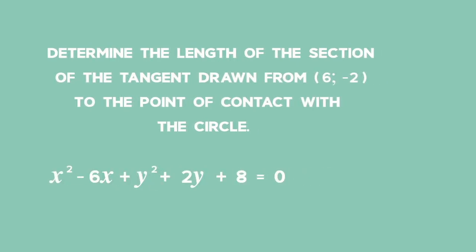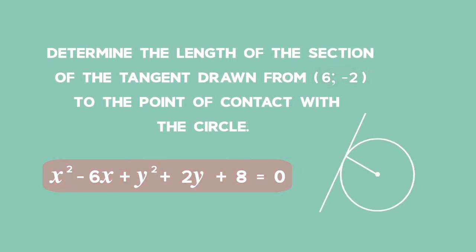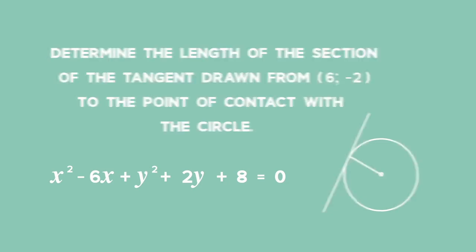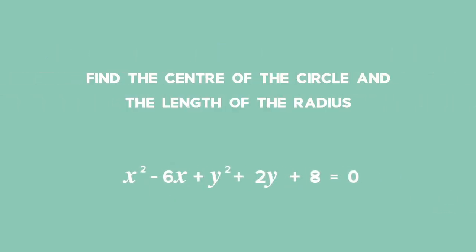So far, all we know is a point on the tangent and the equation for the circle. We need to find the centre of the circle before we can make a rough sketch. Sometimes we have to take one step and then return to the question with our new information to see what we can do next. We can find the centre of the circle and the radius by completing the square using the circle's equation.